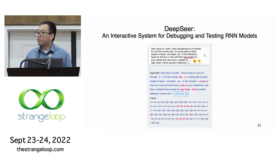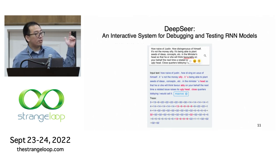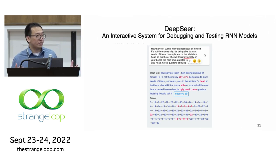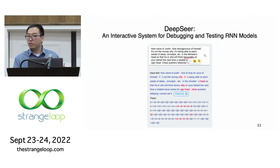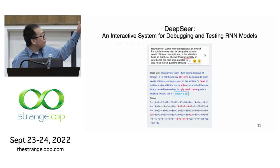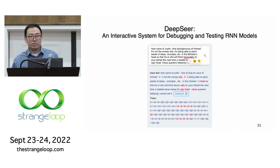Going back to the previous misclassification example, with DeepSeer you can enter the misclassified text into DeepSeer. It will immediately produce a state trace that reflects the intermediate decisions made by the RNN model after reading each word in the input text. Red means negative and blue means positive. Similar to how you step through source code, you can step through the state trace and see what happens after the model reads each word.